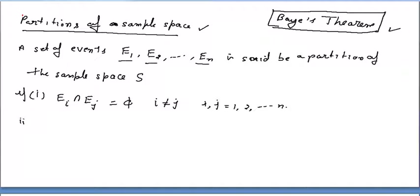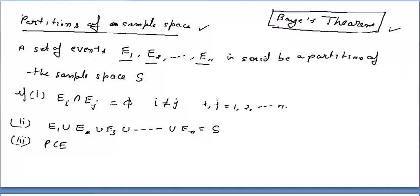Condition number two: if you take the union of all the events E1 union E2 union E3 and so on up to En, it must equal S. The third condition: the probability of any event Ei must be always greater than 0. We will not include those events whose probability is 0, only those with positive probability.